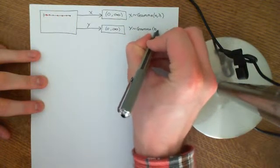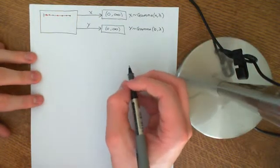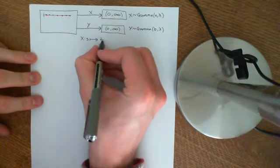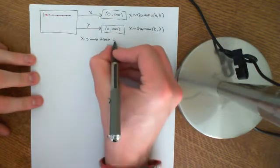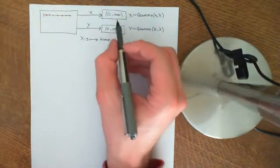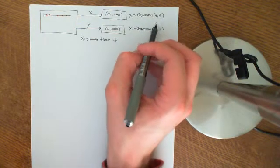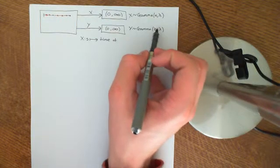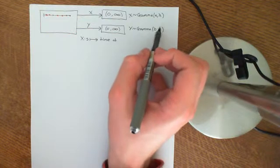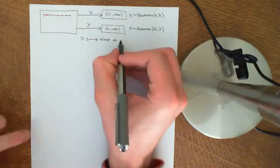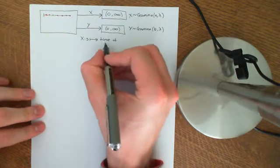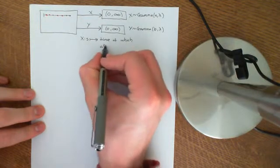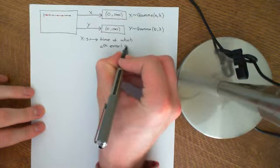So the exact same setup as we've used in previous videos. We'll define X to map each outcome onto the time at which the A-th email arrives. This is only a good intuitive way of thinking about the gamma distribution if A and B are positive integer values. Lambda can take any value — it represents the expected rate at which you receive emails, and it can be any positive real number.